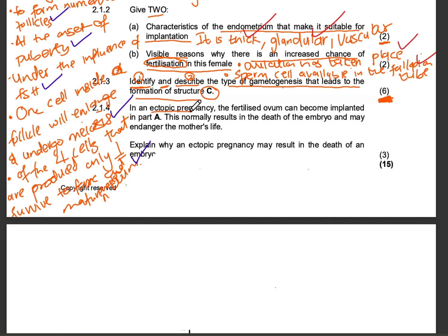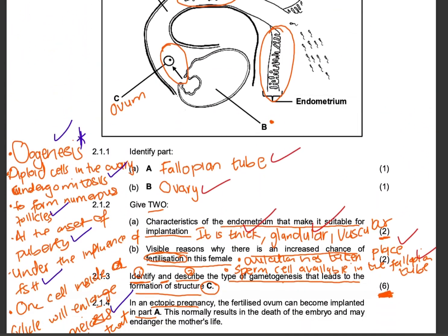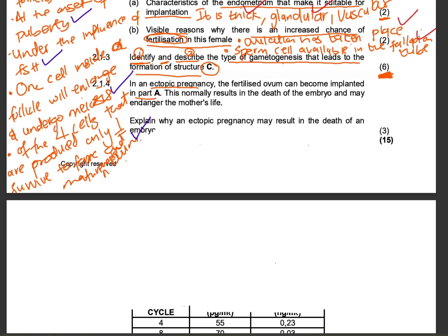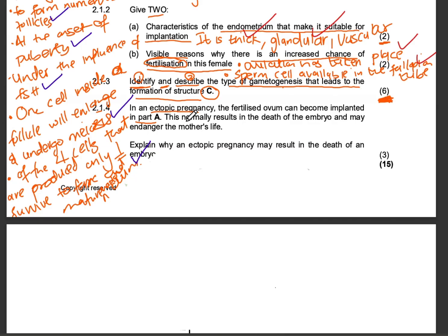In an ectopic pregnancy, the fertilized ovum can become implanted in part A — the fallopian tube. This normally results in the death of the embryo and may endanger the mother's life. The ovum will be fertilized to form the zygote, then the morula, then the blastula or blastocyst, then implantation will happen — but in the fallopian tube instead of the endometrium.